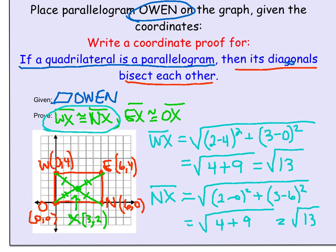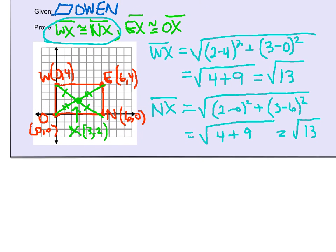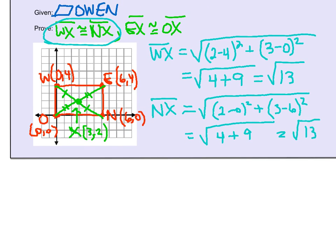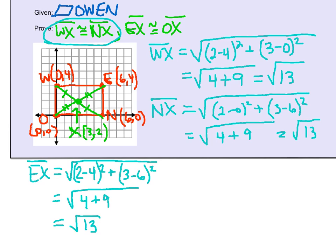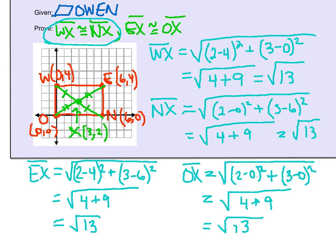Next, we're going to do the same thing but with the distance formula for EX and OX. Using the points (6, 4) and (3, 2), we find that EX is equal to √13. Lastly, we want to find OX using the points (0, 0) and (3, 2). Once again, using those two points, we figure out that OX is equal to √13. So we have now proven the other piece, which is EX is congruent to OX.